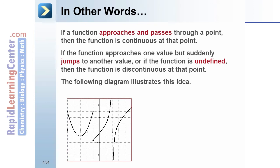If a function approaches and passes through a point, then the function is continuous at that point. If the function approaches one value but suddenly jumps to another value, or if the function is undefined, then the function is discontinuous at that point. The following diagram illustrates these situations.